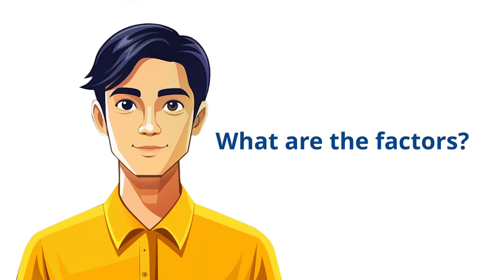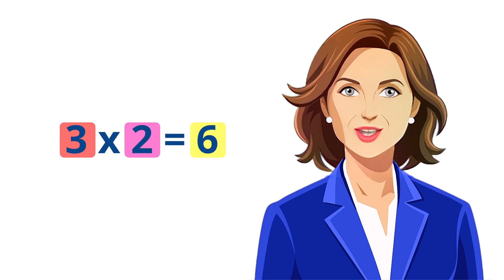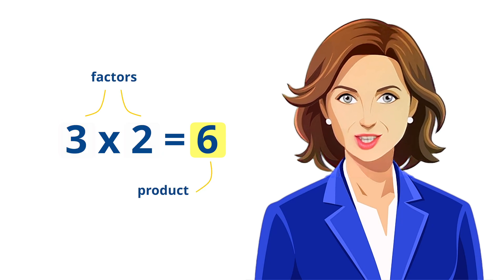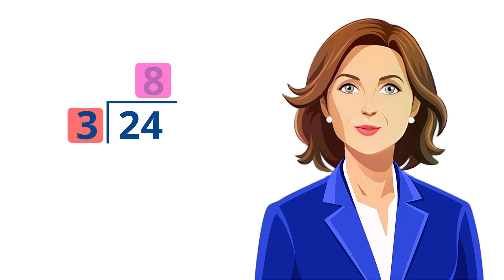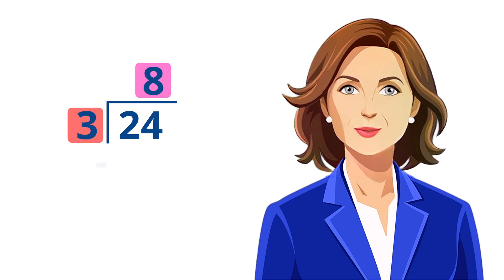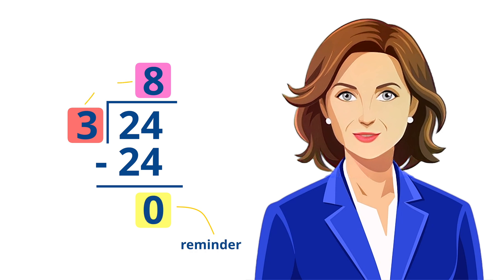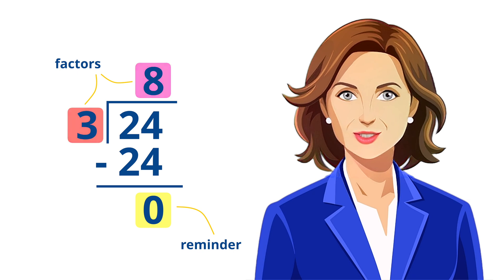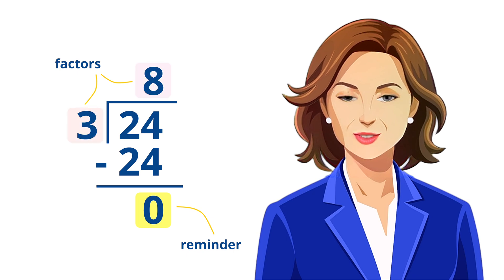So what exactly are factors? A factor of a number is any whole number that can be multiplied by another whole number to get the original number. In other words, you can divide a number by another number without leaving a remainder. Then the divisor and the quotient are said to be the factors of the dividend.